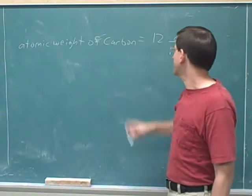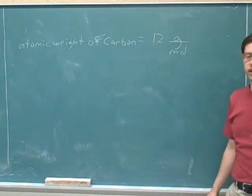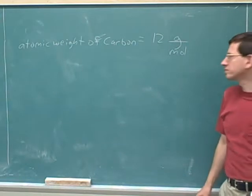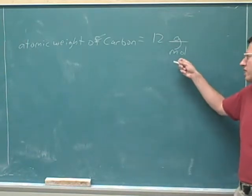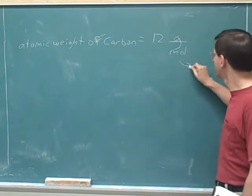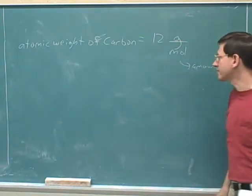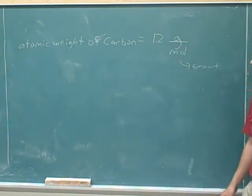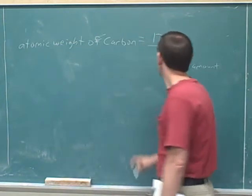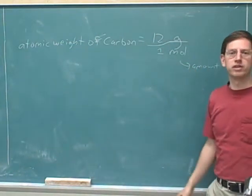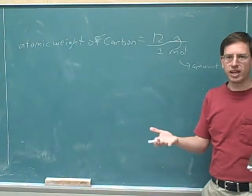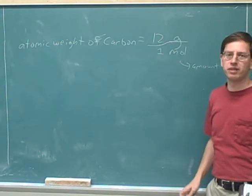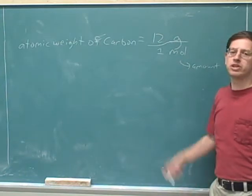You probably already know that the atomic weight of carbon is 12 grams per mole — you can look that up in your periodic table. Most of you have probably encountered the concept of a mole, but just in case you haven't, a mole is just an amount — a way of measuring an amount of carbon or of some substance. It tells us that if we have one mole of carbon, it would have a mass of 12 grams. If I had one mole, I would have a mass of 12 grams.